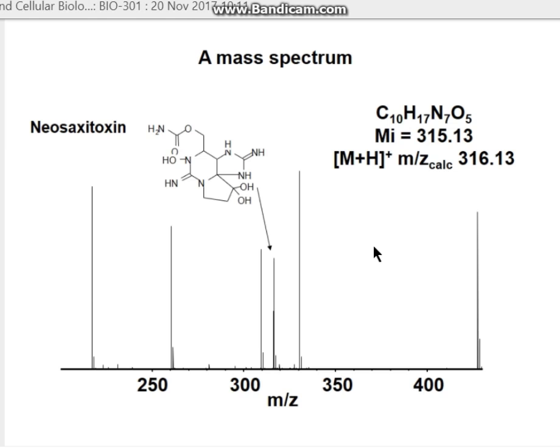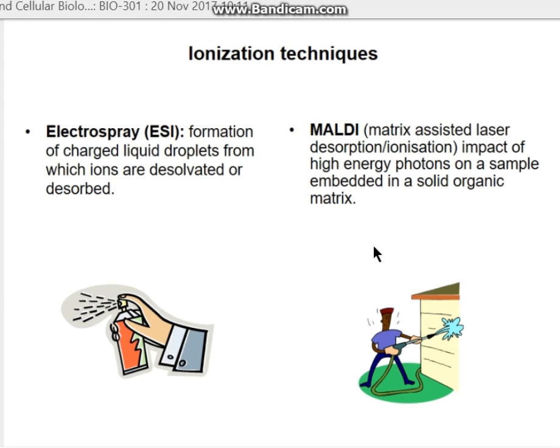We have to bear that in mind when thinking about peptides. There are two key ionisation techniques used in proteomics and more generally in biological mass spectrometry. Up until the early 80s, mass spectrometry was really only found in chemistry departments as a sort of support for synthetic chemists — so for small molecules.